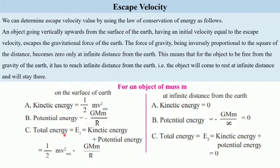Total energy E1 equals kinetic energy plus potential energy. So we get E1 = ½mv²_escape − GMm/R.